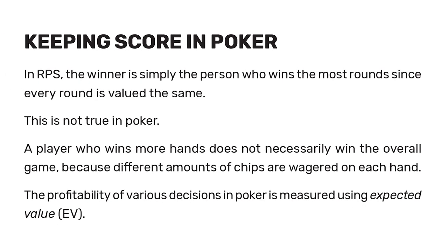There is one other important difference when comparing RPS and poker: the scoring system. In RPS, the winner is simply the person who wins the most rounds, since every round is valued the same — you win a point, lose a point, or tie. This is not true in poker. A player who wins more hands doesn't necessarily win overall, because different amounts of chips are wagered on each hand. The profitability of decisions in poker is measured using EV, or expected value.